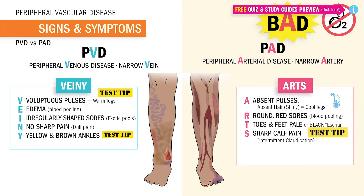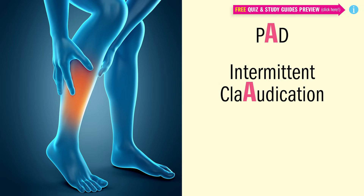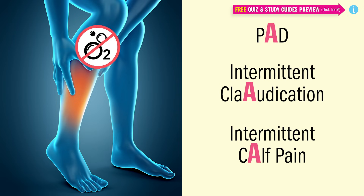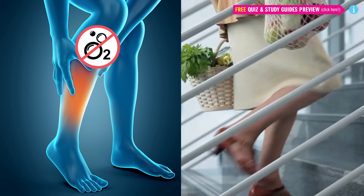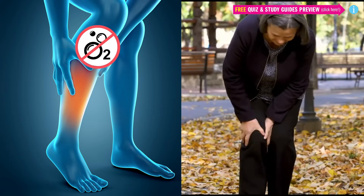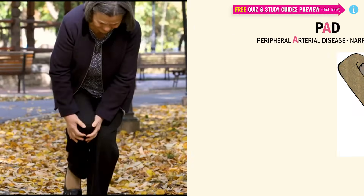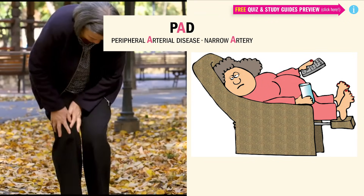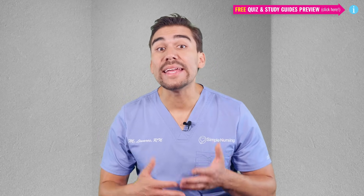It's called intermittent claudication. This key word comes up a lot on exams and the NCLEX, specifically for PAD. Remember, intermittent claudication is intermittent calf-ication, because it causes pain in the calves. The emphasis is on the A for claudication, because we remember PAD. Exercise like walking up stairs or across a parking lot causes muscles to use more oxygen than at rest, so the lack of oxygen causes calf muscle pain. When the legs are elevated, it's harder to pump blood uphill, so low oxygen equals more pain.